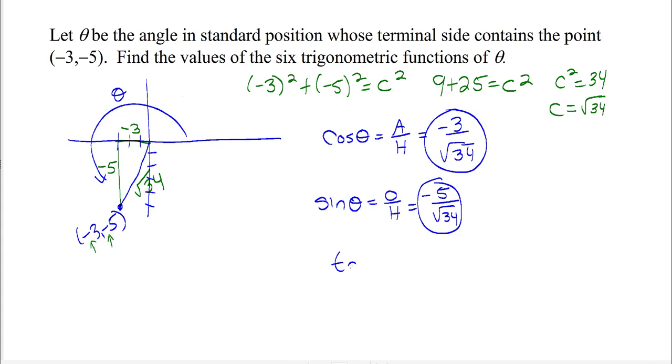Now let's do tan θ. Tangent is opposite over adjacent, so that's -5/-3. We can simplify by canceling the negatives, giving us 5/3.